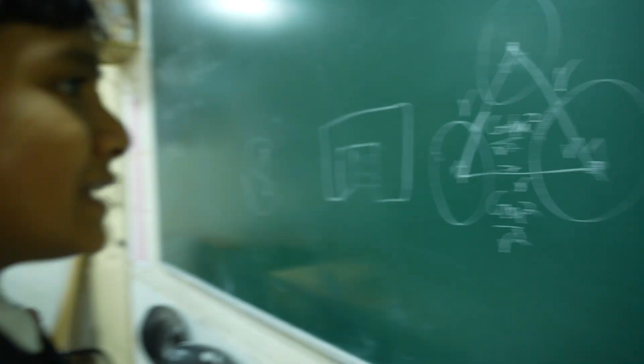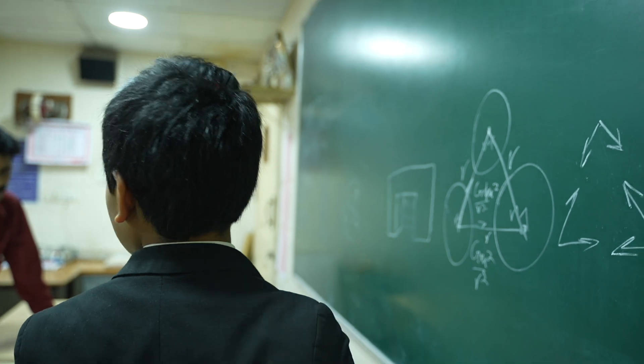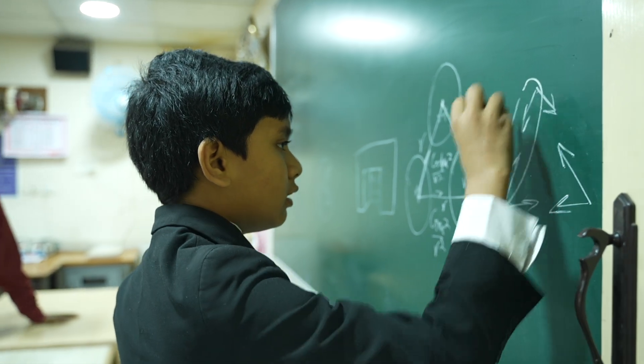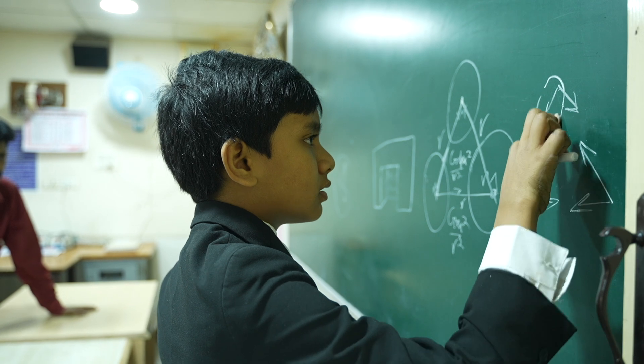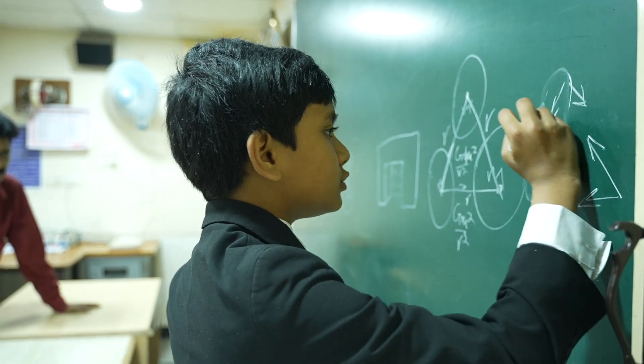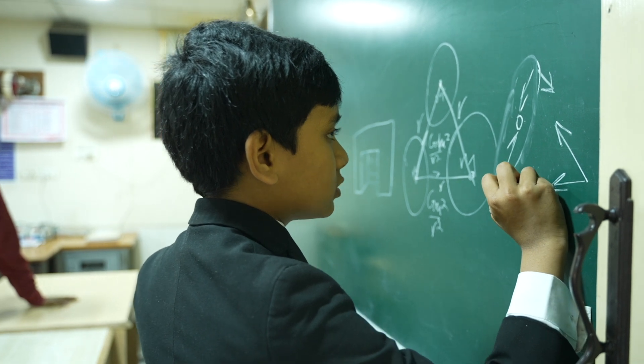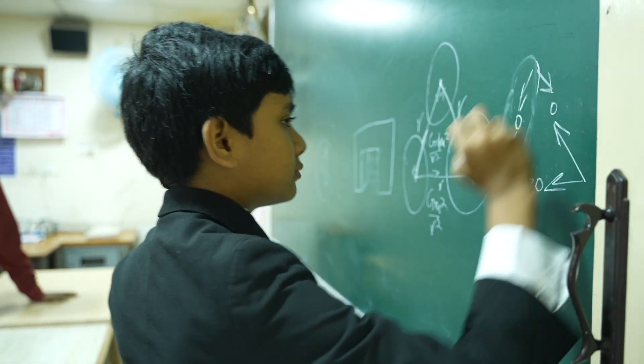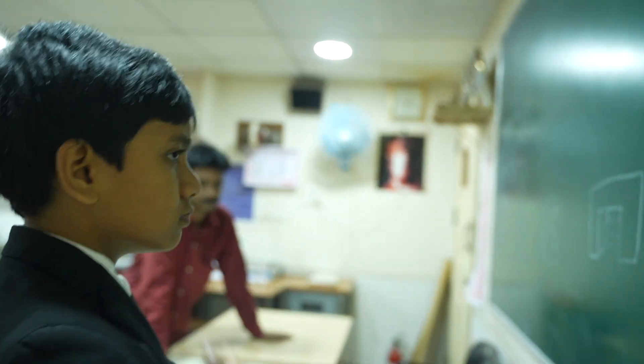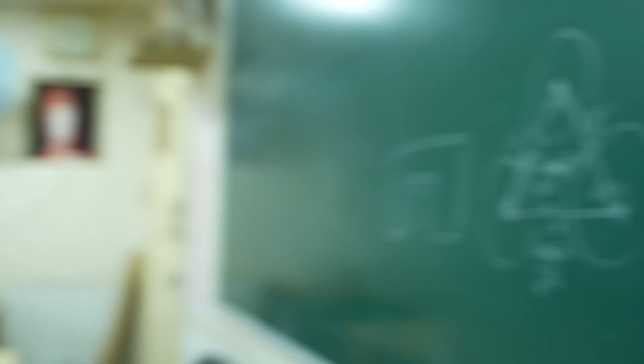So if we're asking if all these forces sum up to zero, they have to, right? Well, no, actually, these two are going to collapse towards each other. These two are going to collapse towards each other. These two are going to collapse towards each other. Yes. That seems correct to me. Correct. Thank you.